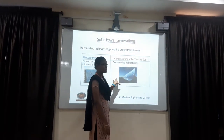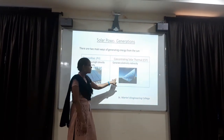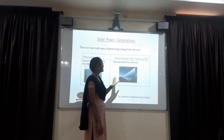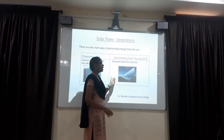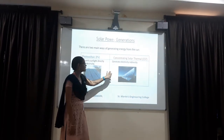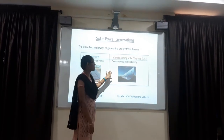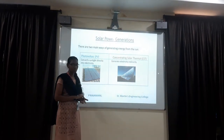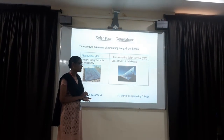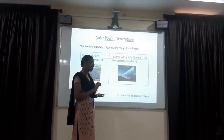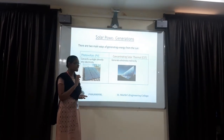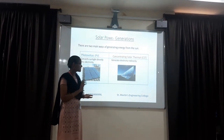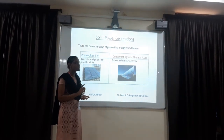The second way is concentrating solar thermal. It generates electricity indirectly. The concentrating solar thermal electrical system is used in power turbines or nuclear power plants. Here, the sun's energy is indirectly converted into electrical energy. The key component in the system is turbines.